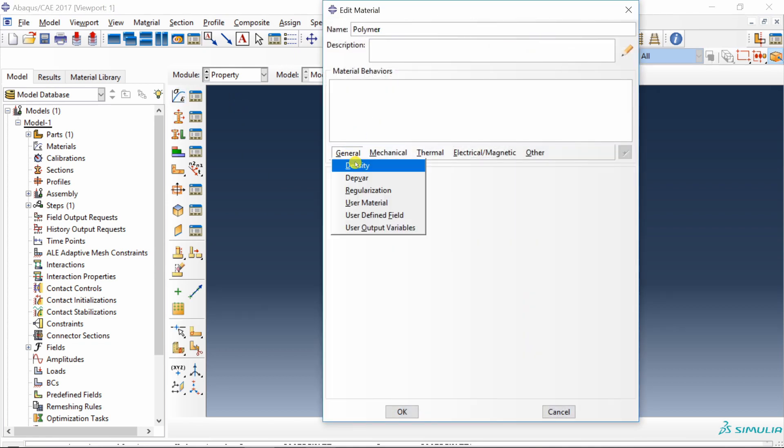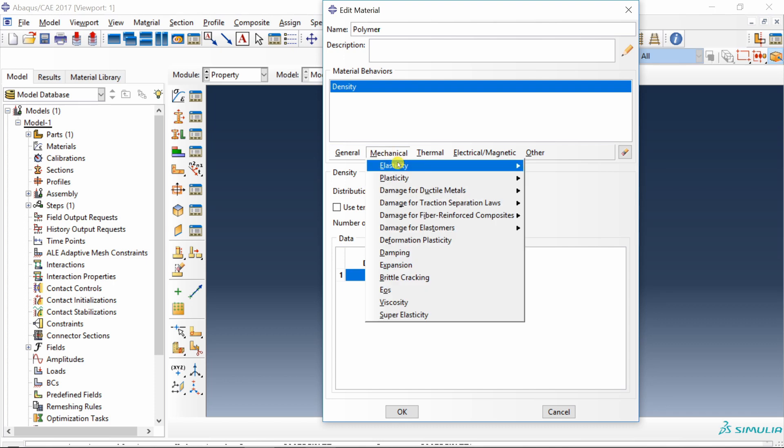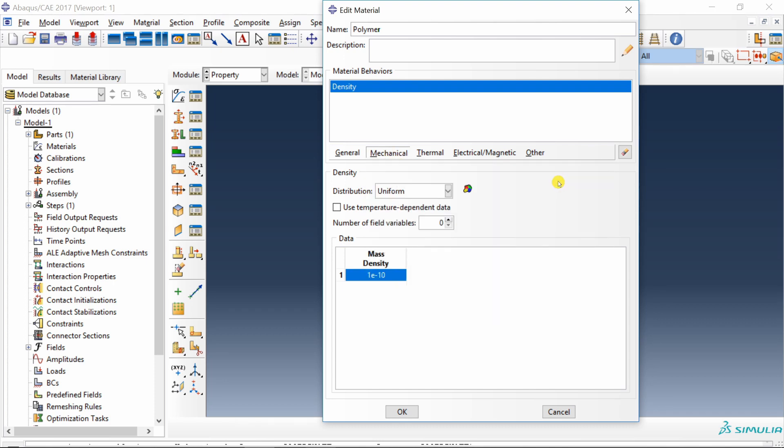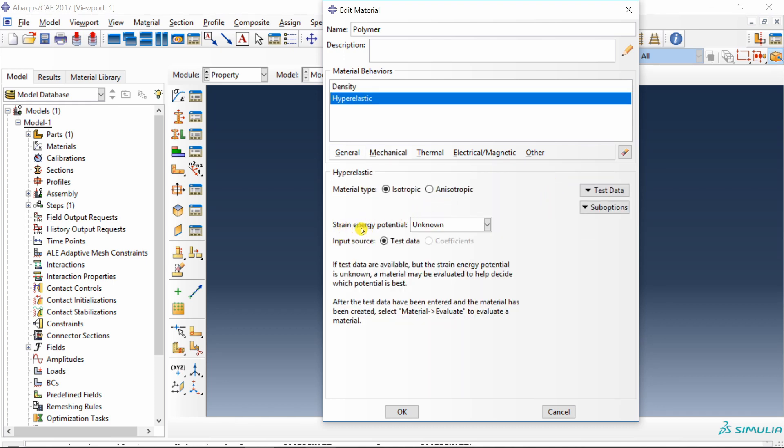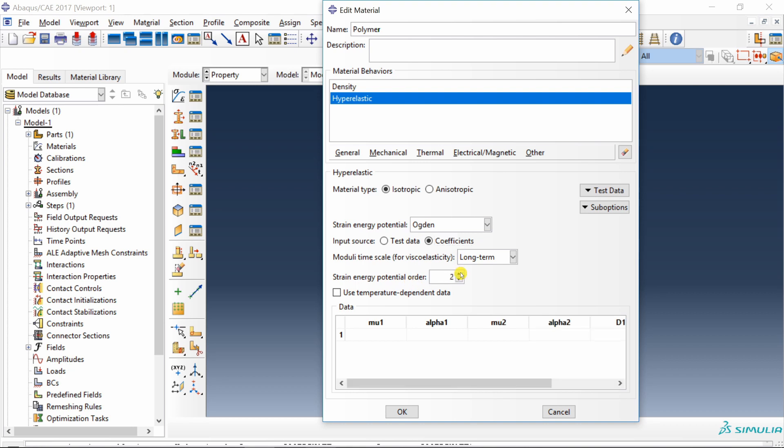It will ask you to select a construction line as a center line. You can select this vertical line and angle of revolution give 360. Say okay. And you can see our part is created. Then go to property. Create a material. Polymer. First we have to define density because this is going to be a dynamic analysis. 10E-10.